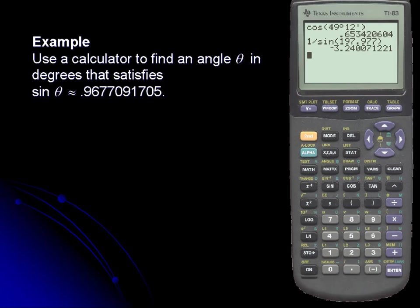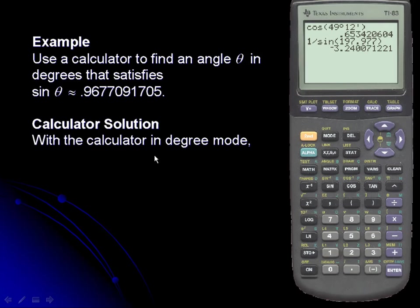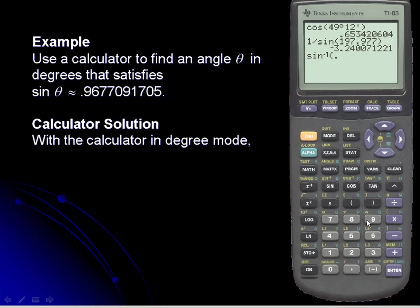Next let's look at finding some angle measures. We'll use a calculator to find the angle theta in degrees that satisfies sine of theta equal to roughly 0.96. To find an angle measure we'll use the arc functions, so we want to put in the arc sine. Our calculator is already in degree mode, so we'll put in the arc sine of 0.9677091705.